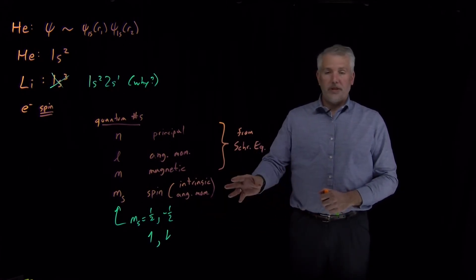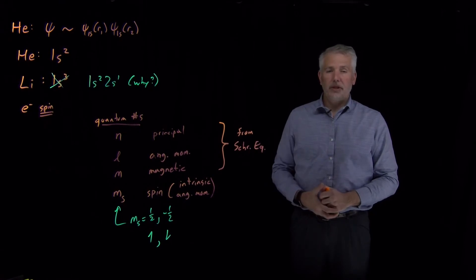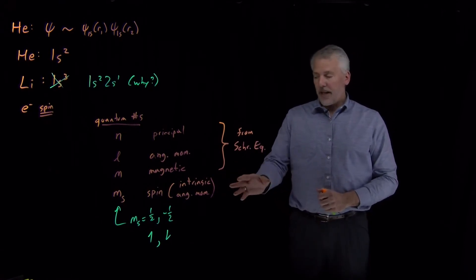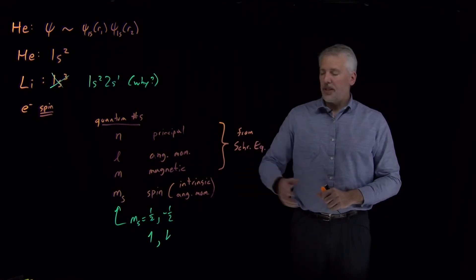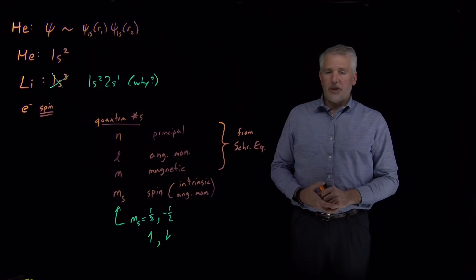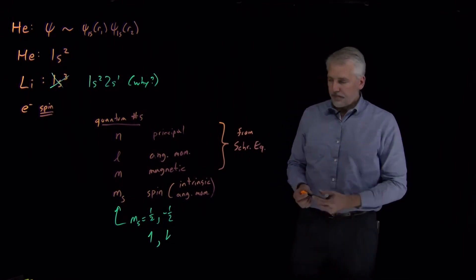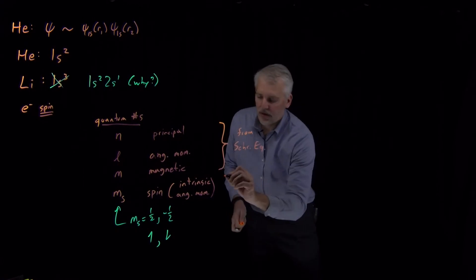We haven't derived where those come from. It turns out when you solve the relativistic version of Schrödinger's equation, that's where the origin of spin comes from. That's getting a little far afield from physical chemistry—it's more in the domain of physics. So we'll simply say that we know, both from experiment and from solving the relativistic version of Schrödinger's equation, that electrons have this spin.